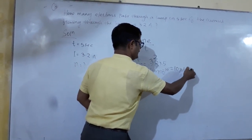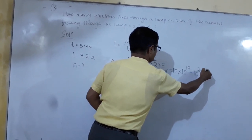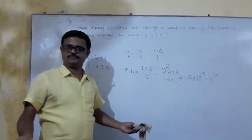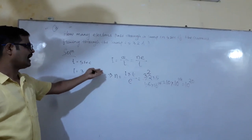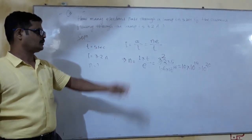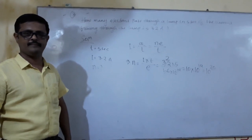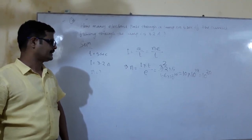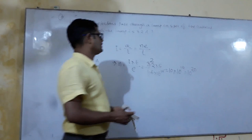This gives the answer. So we find how many electrons pass through the lab in 5 seconds and get a large number of electrons passing through in 5 seconds.